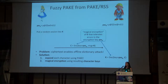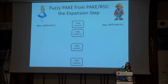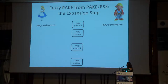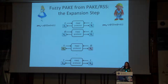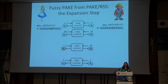Alice and Bob are going to run PAKE for every single character in their password. Whenever the password characters match, they're going to get back the same key; whenever they don't, they're going to get back different keys. At the end, they'll have a list of what we call character keys — high-entropy character keys that match or don't match depending on whether the corresponding characters did.